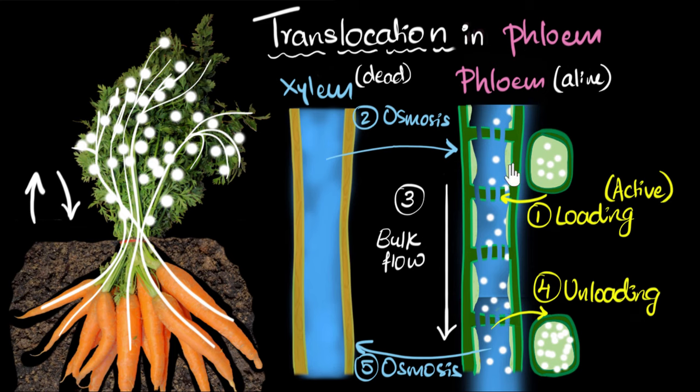But another question you might be wondering is, why do we have to go through all that trouble to keep these cells alive? Why is it necessary that these cells need to be alive? Well, the answer is in this process. You see, we just saw that in order to load the sugar into the phloem, that requires energy. It's an active process.